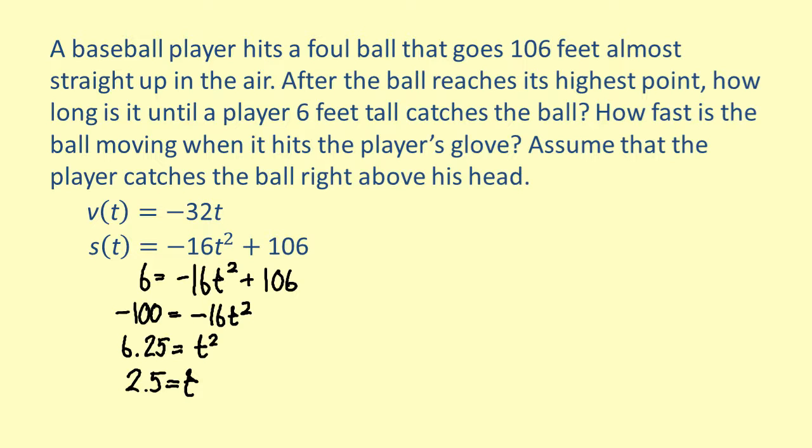Next, we can find the velocity of the ball when it reaches the player by substituting 2.5 for t in v. This gives us v of 2.5 equals negative 32 times 2.5. Simplifying, we get negative 80. Therefore, the ball is traveling 80 feet per second, and it takes 2.5 seconds to reach the player's glove.